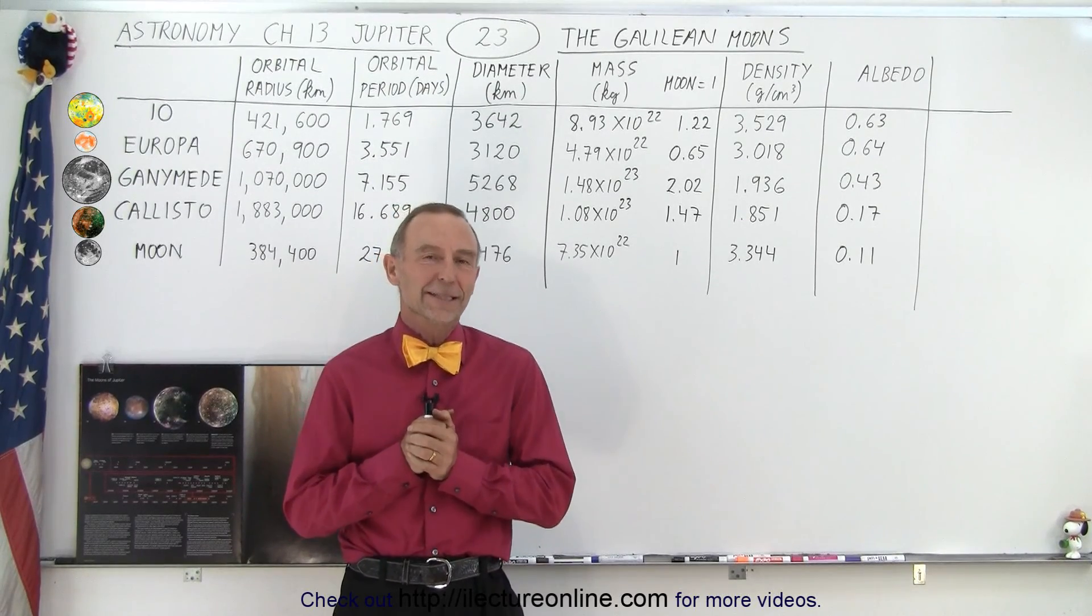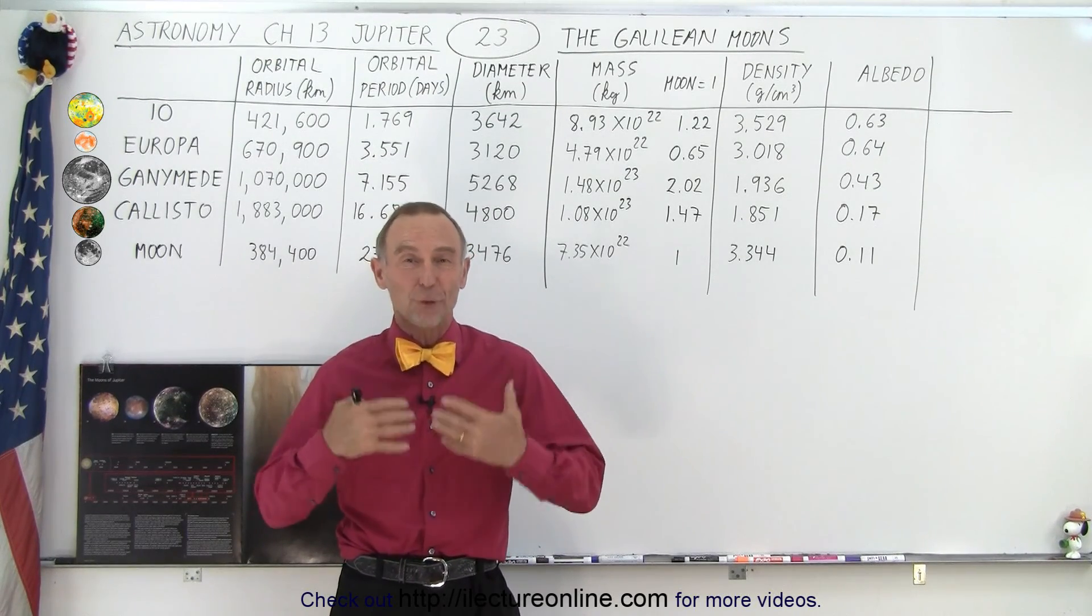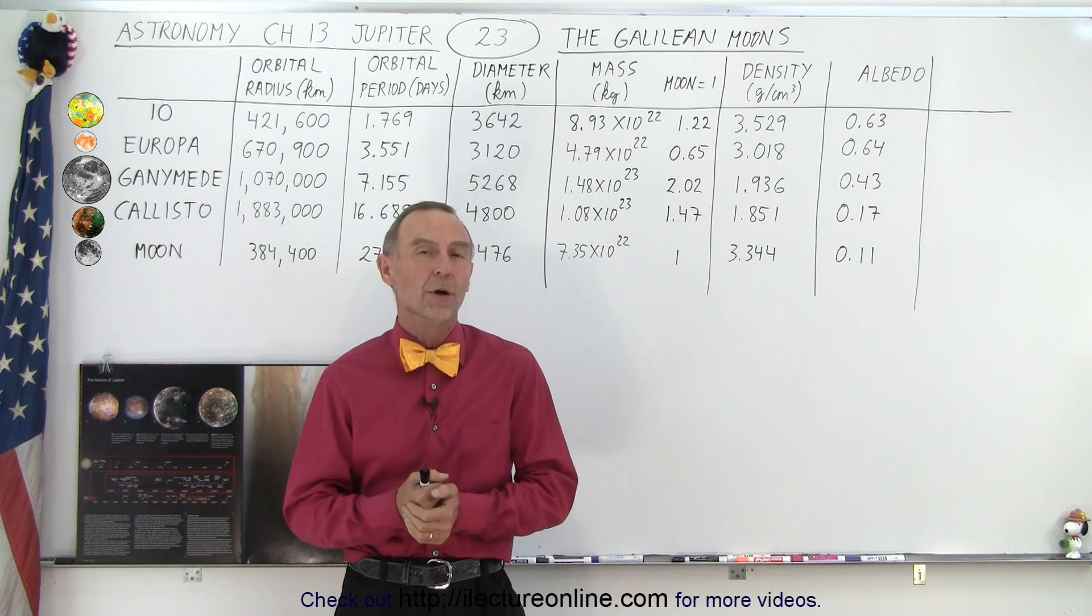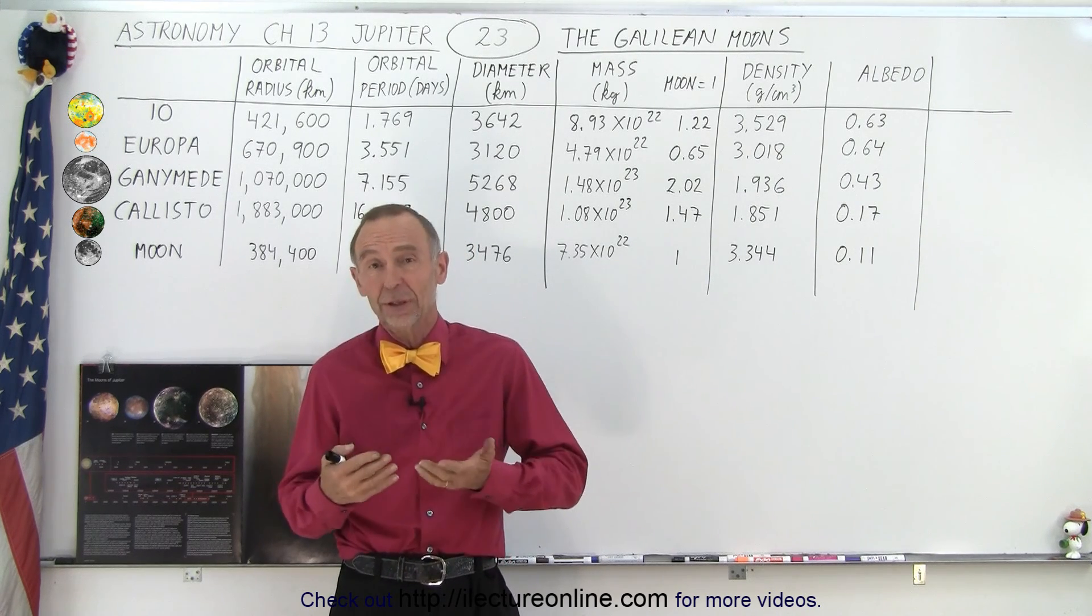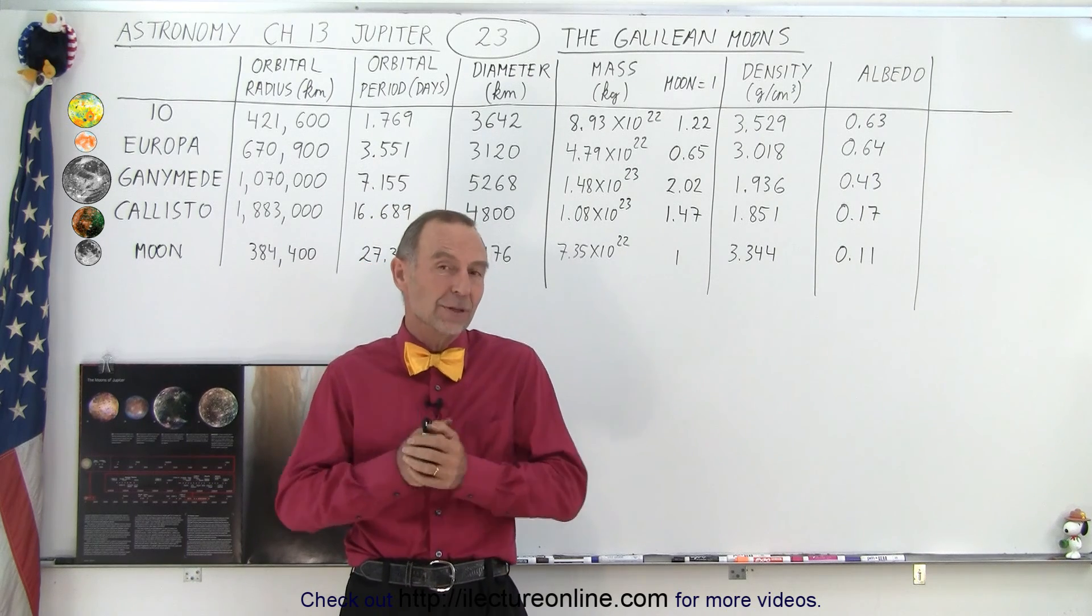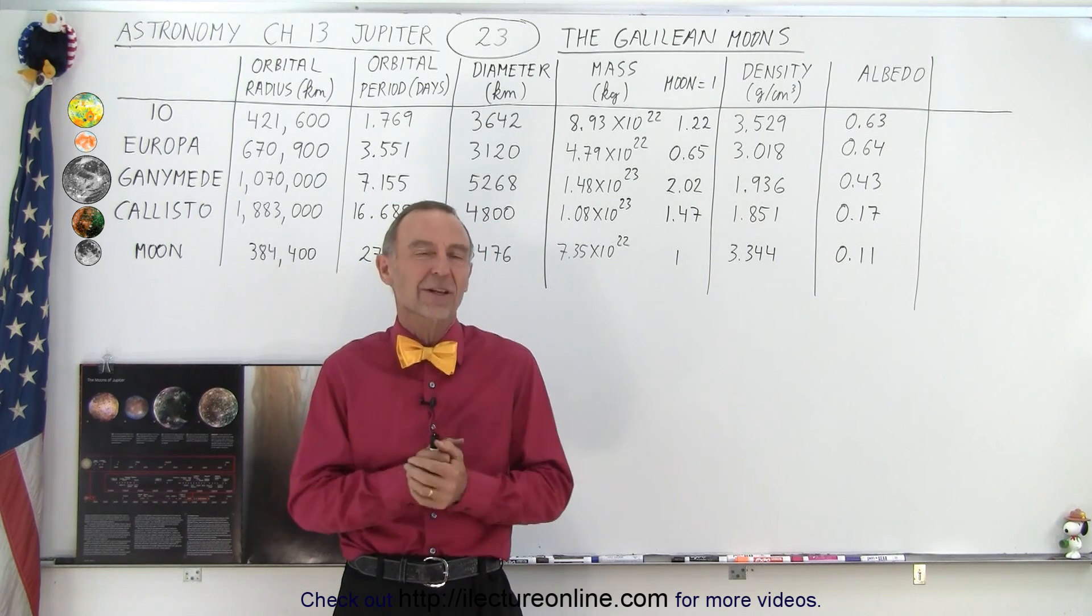Welcome to iLecterOnline. Now let's talk about the four large moons of Jupiter, also known as the Galilean moons, since Galileo was the first one who actually looked at Jupiter with a telescope, about a 20x telescope.